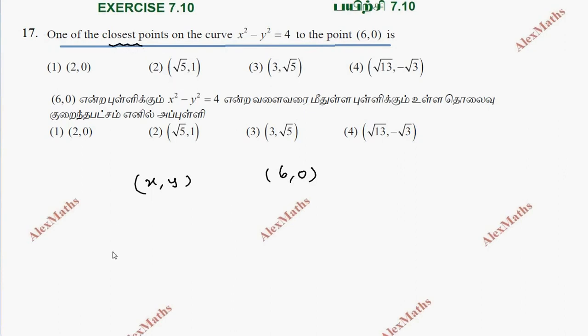So this is the distance. Distance is the square root of (x minus 6) whole square plus (y minus 0) whole square.